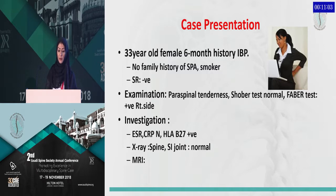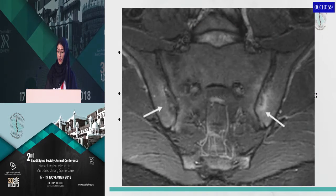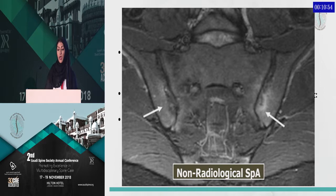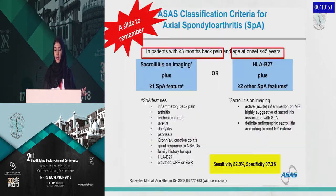Her investigation showed positive HLA-B27, and the MRI of the SI joint was abnormal, showing increased signal intensity in both sacroiliac joints. This was consistent with non-radiographic SpA.